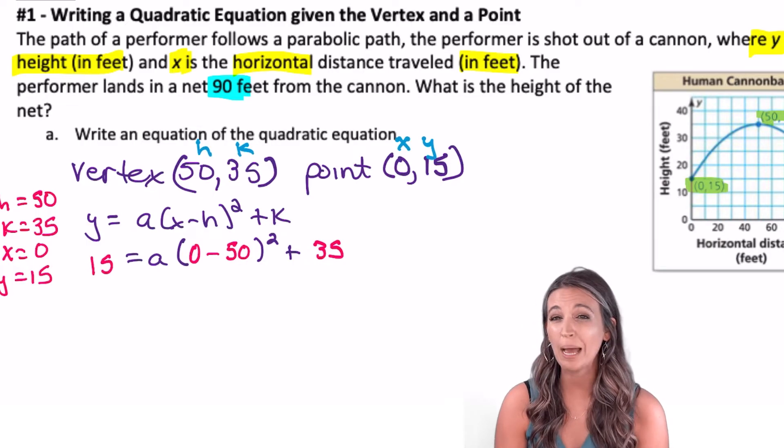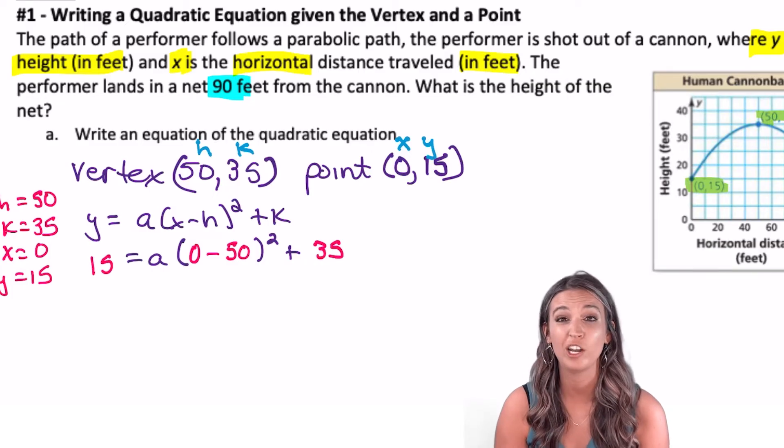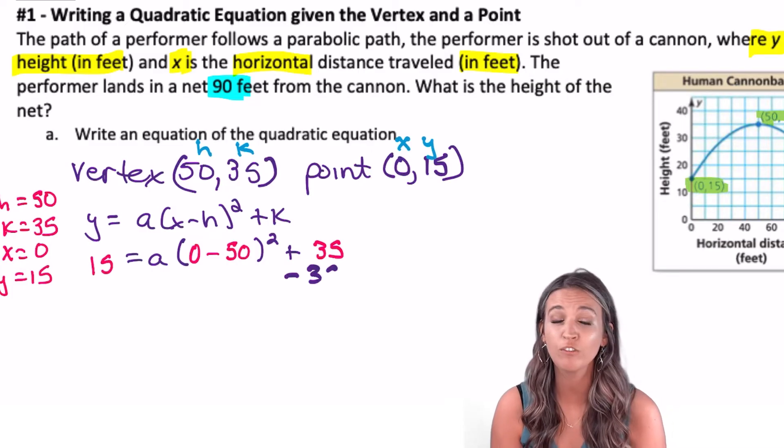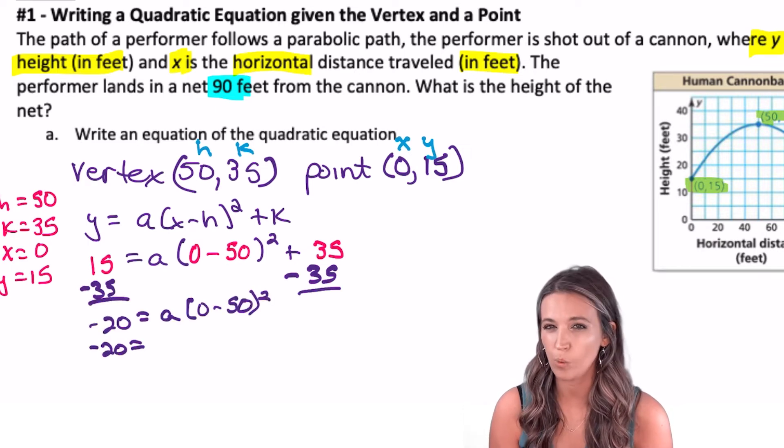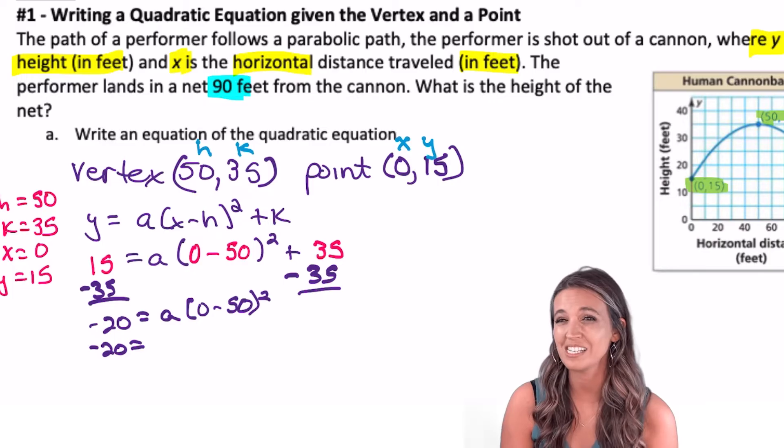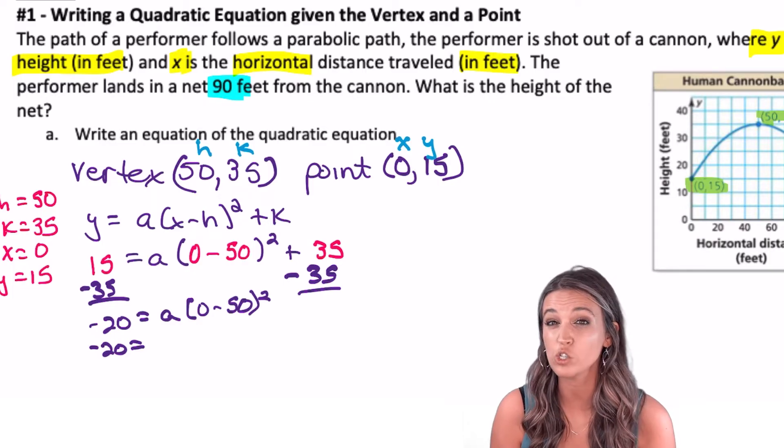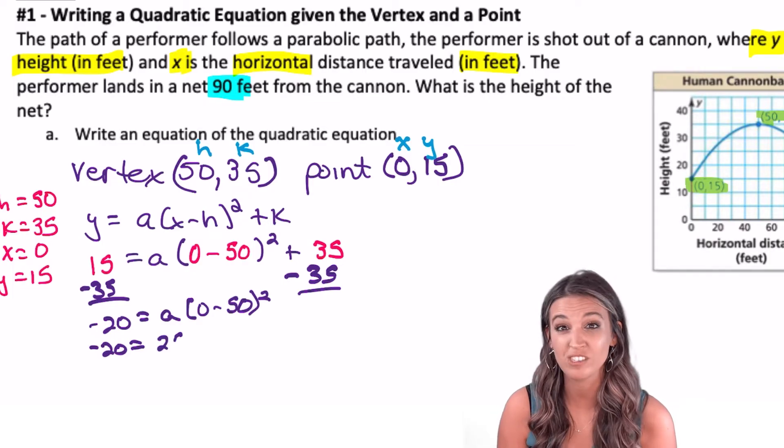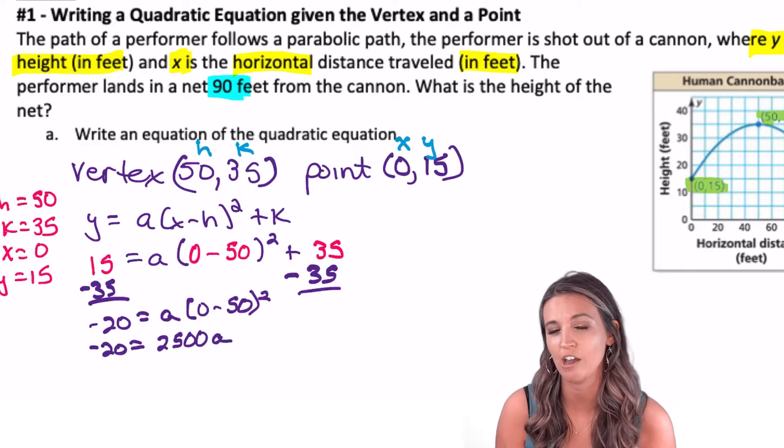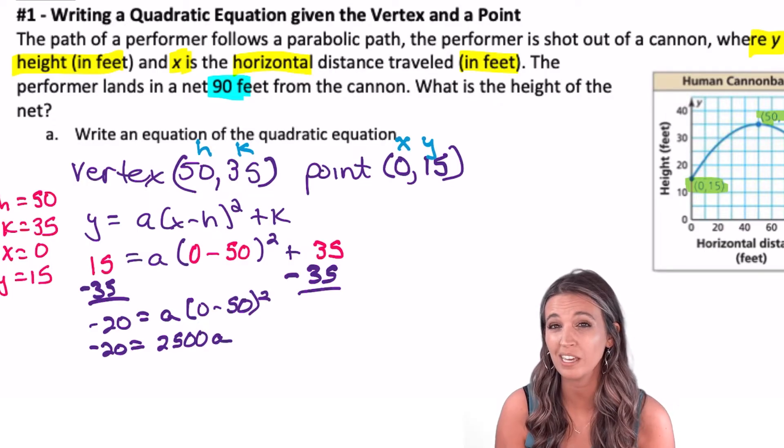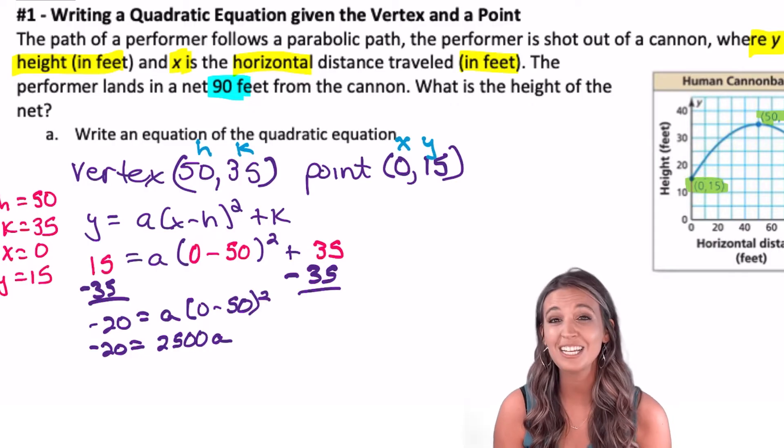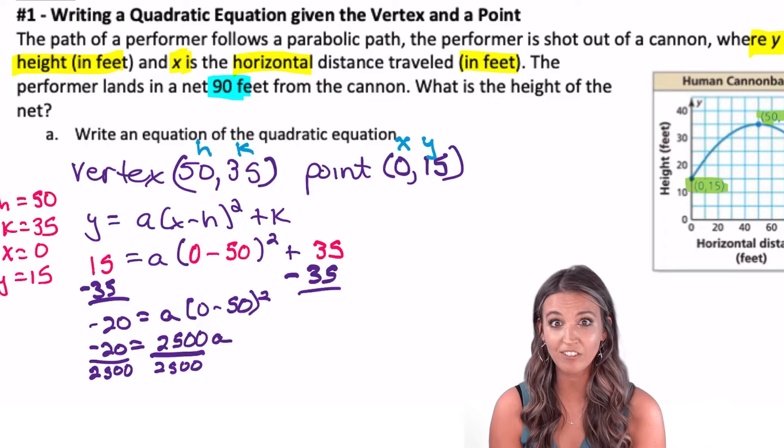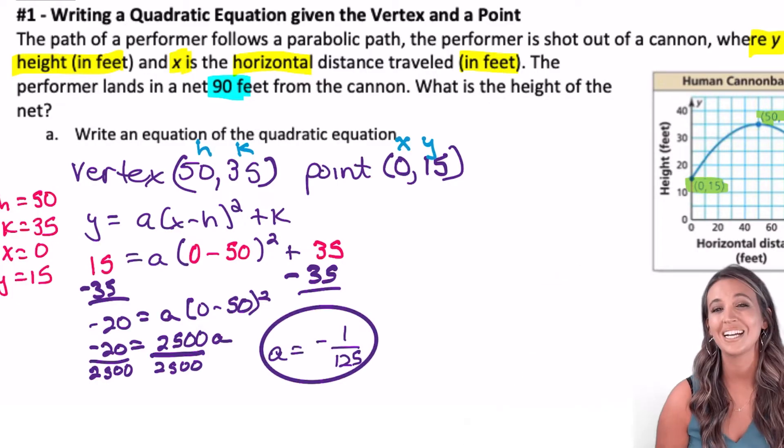As I start to solve for a, I'm going to move that 35 to the other side right away. Subtract 35 from both sides of your equation. Next to a, I have that 0 minus 50 squared. Well, 0 minus 50 is negative 50 and negative 50 squared is 2500. I'm going to write that in front of a on the next line. Negative 20 equals 2500 times a. Then I can divide both sides by 2500 and I've got a. My simplified a is negative 1 divided by 125.